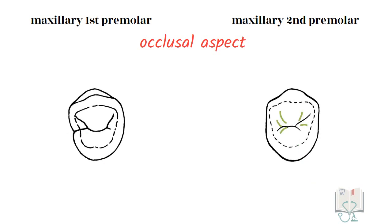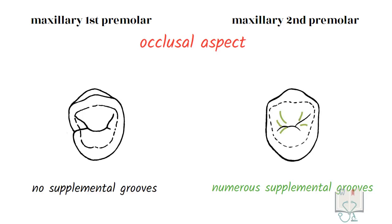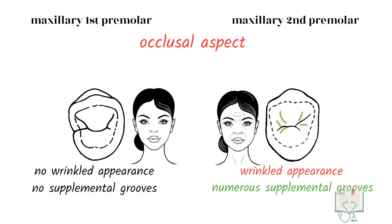In the second premolar, there are numerous supplemental grooves radiating from the central groove, but not in the first premolar. This makes the occlusal surface of the second premolar have a wrinkled appearance.